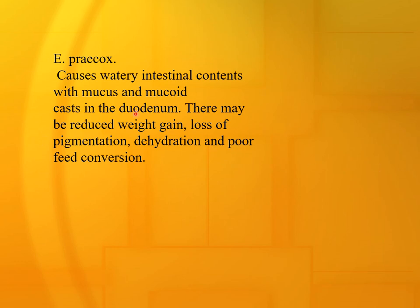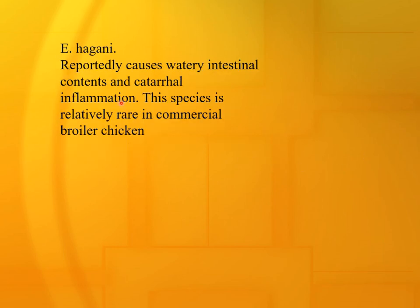Eimeria barcox causes watery intestinal content with mucus and mucoid cast in the duodenum. There may be reduced weight gain, loss of pigmentation, dehydration, and poor feed conversion. Eimeria hagani: reportedly causes watery intestinal content and duodenal inflammation; this species is relatively rare in commercial broiler chickens.